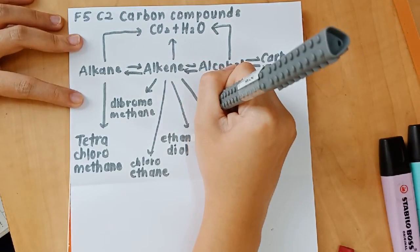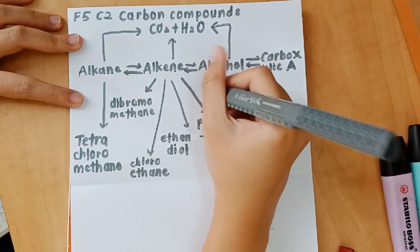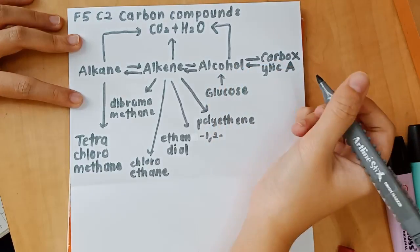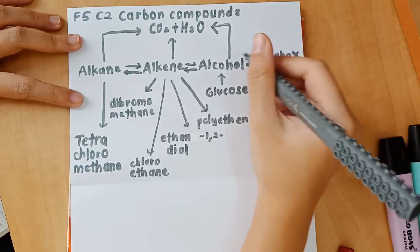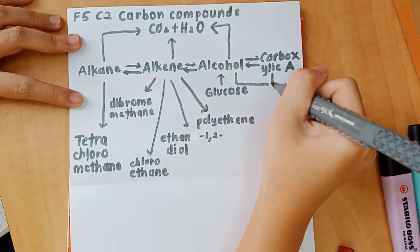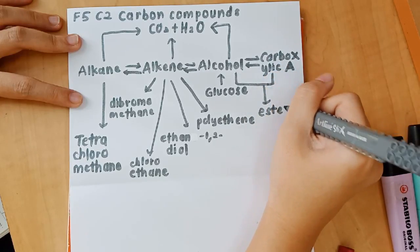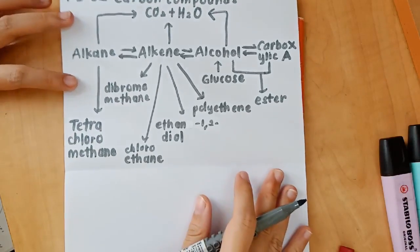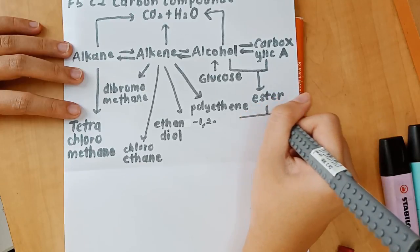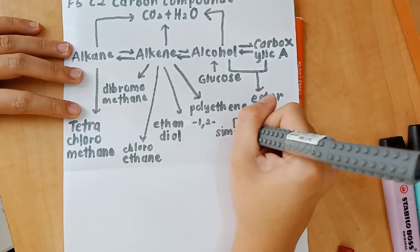And then there's another arrow from alkene ending in polyethene. From glucose, there's a way to produce alcohol as well. And alcohol is the end product. So that is why I drew an arrow from glucose to alcohol. And then alcohol can react with carboxylic acid to produce ester through esterification. So that is why I drew an arrow ending in ester.